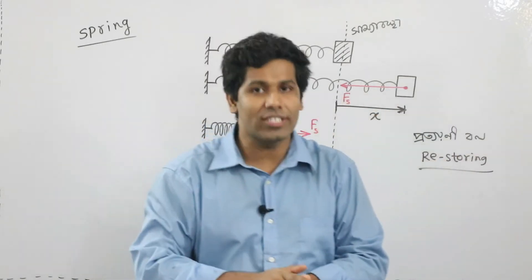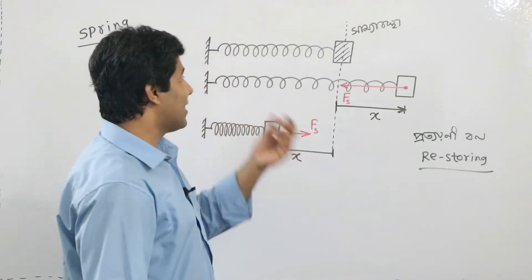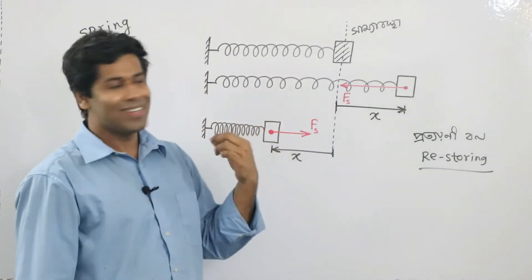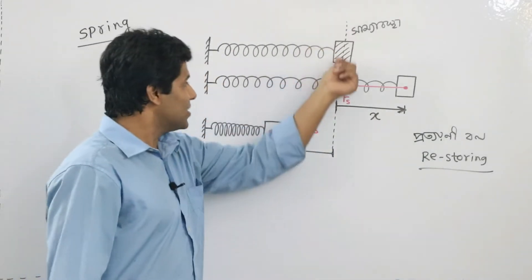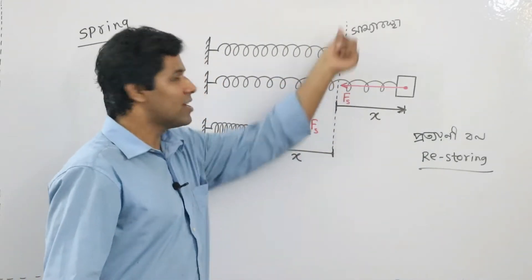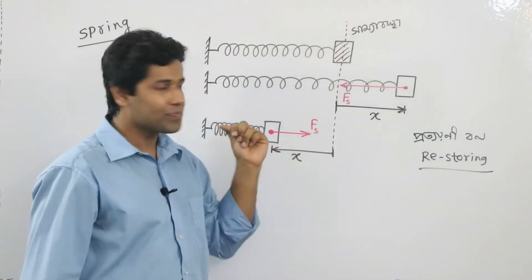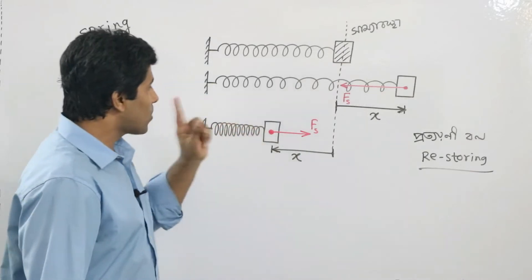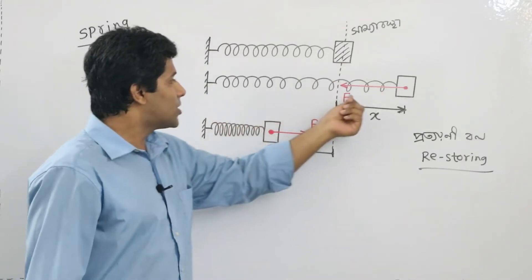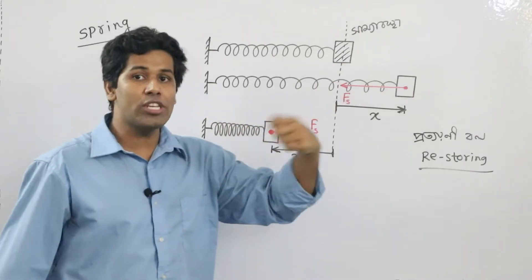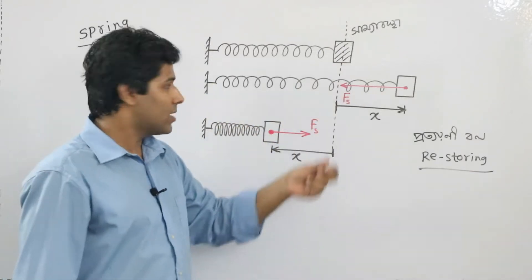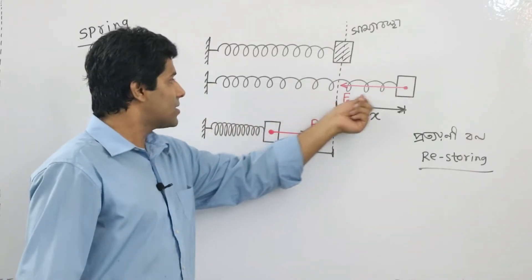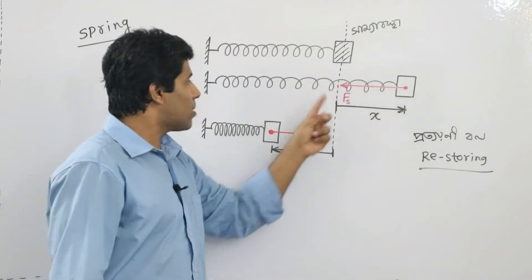That means, spring loves to stay at equilibrium. So, in the first step, the spring force FS is introduced as the first key quantity.